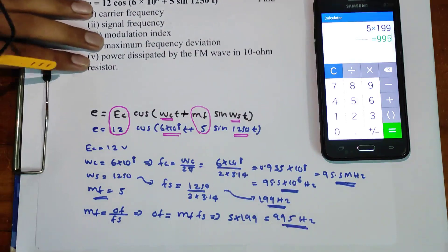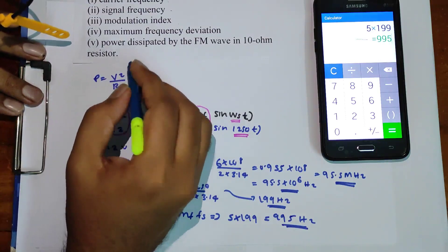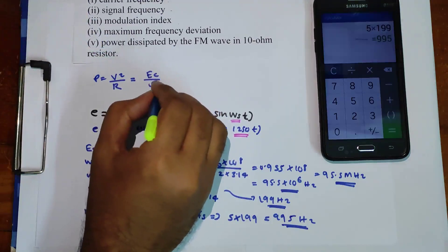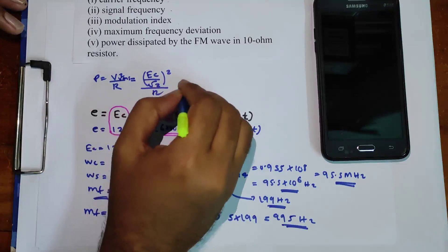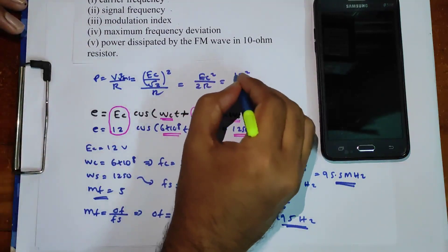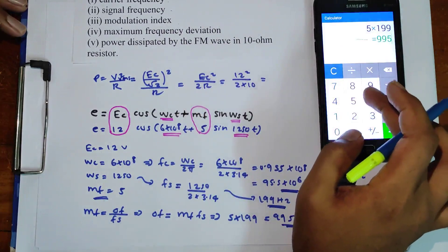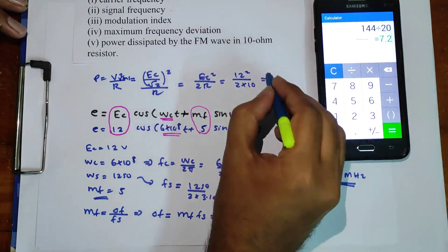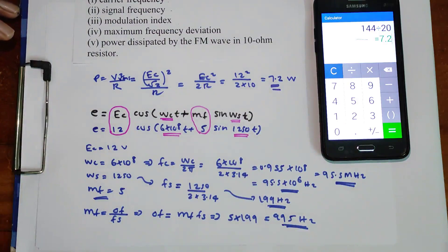The last question is the power dissipated by the FM wave in a 10 ohm resistor. Power P equals V² divided by R, where V is the RMS voltage Ec divided by root 2. So P equals Ec² divided by 2R. With Ec = 12 volts and R = 10 ohms, P equals 12² divided by (2×10), which is 144 divided by 20, equal to 7.2 watts. This is the power dissipated by the FM wave in the 10 ohm resistor. The first problem is now complete.